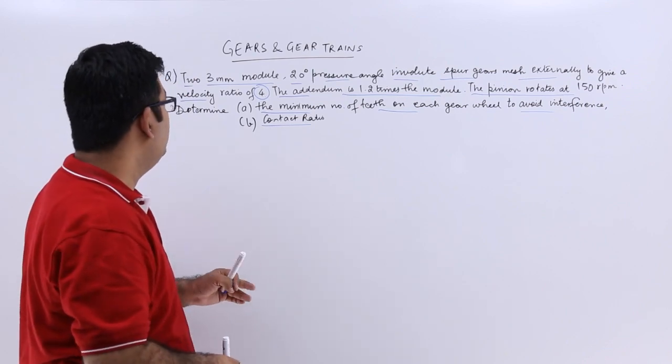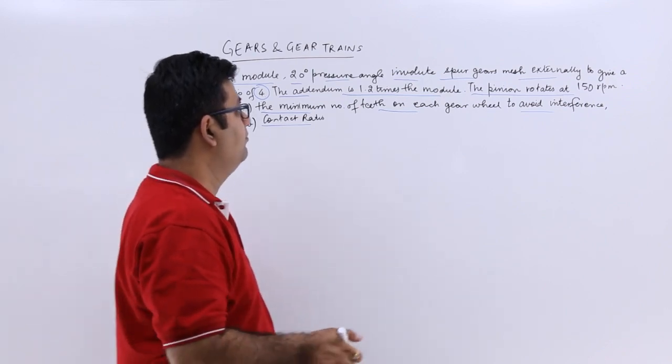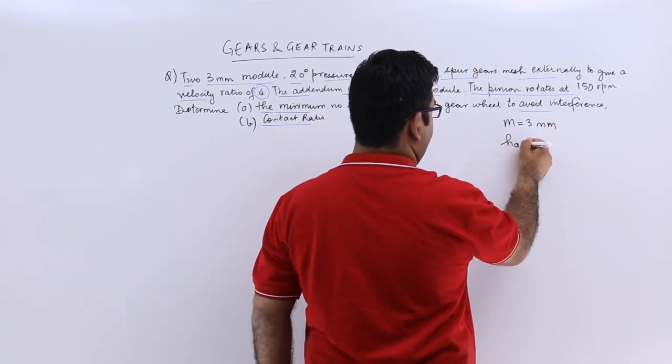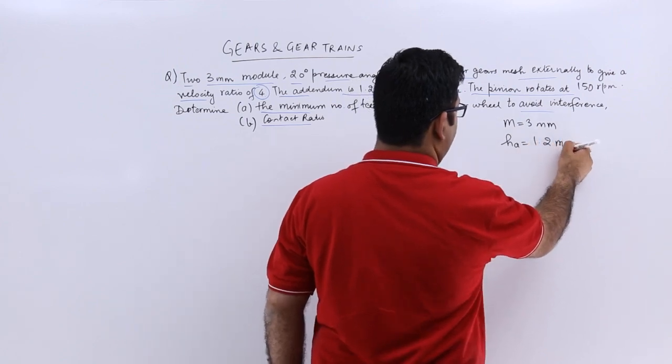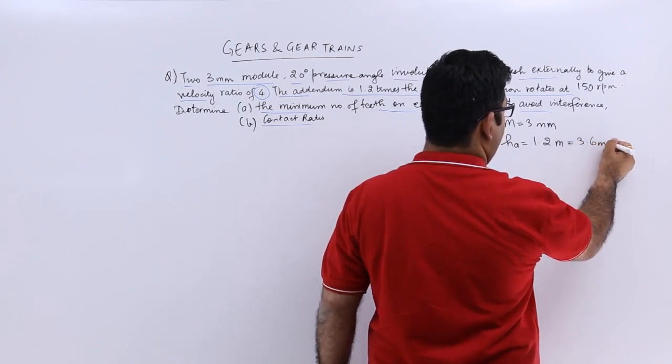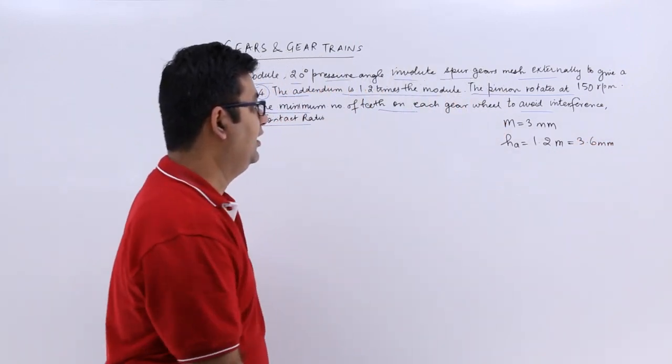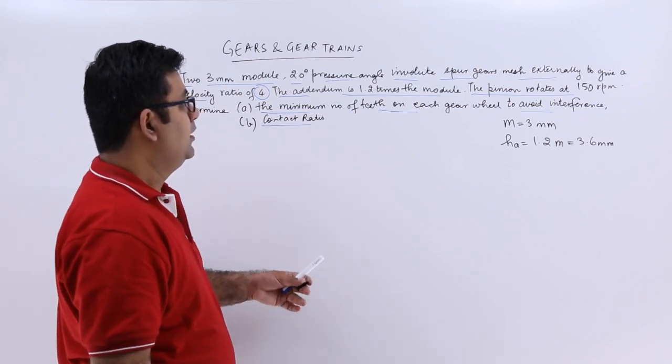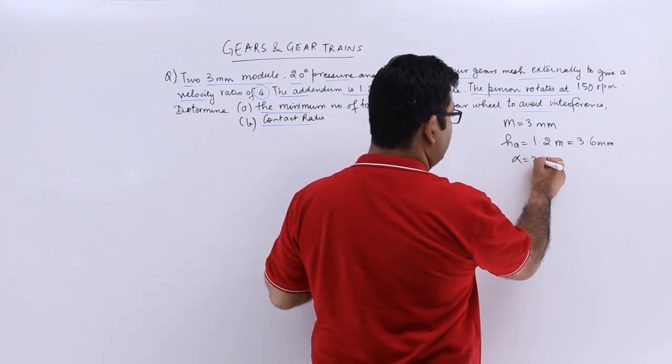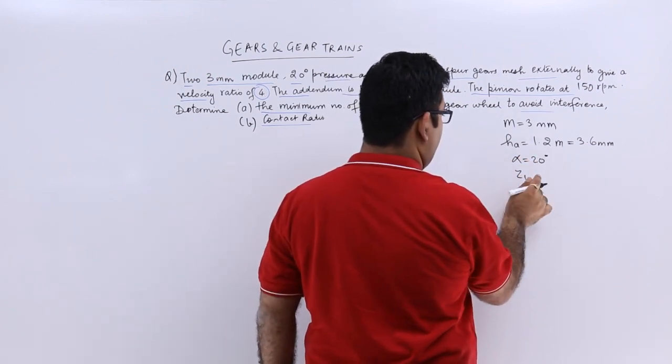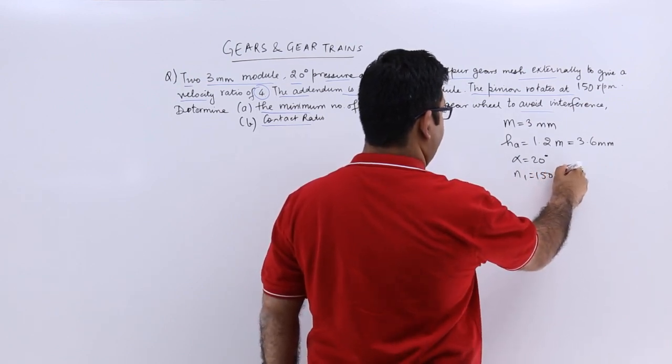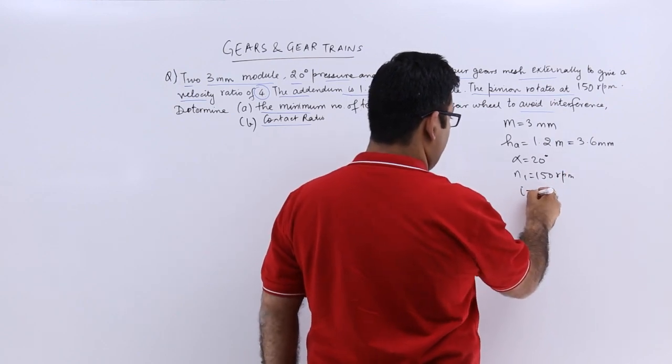Let's quickly write down the data given to you. Module is 3mm, m is 3mm. It is given that addendum is 1.2 times module, so this becomes 3.6 millimeter. The alpha is 20 degrees. The n1 is 150 rpm, and the velocity ratio is 4.